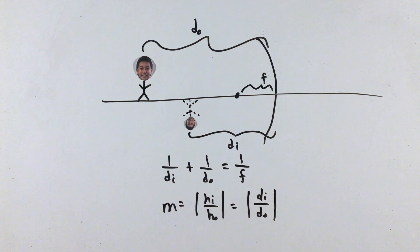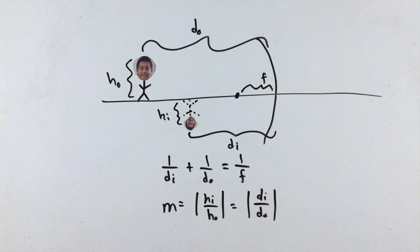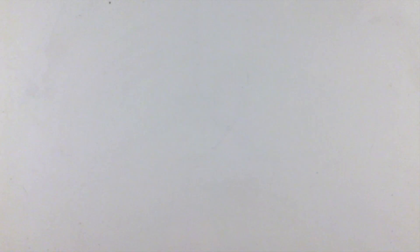In addition, the magnification factor is defined as the absolute value of the height of the image divided by the object, or as the absolute value of the image distance over object distance. The visual way to describe these situations, however, is through ray diagrams.